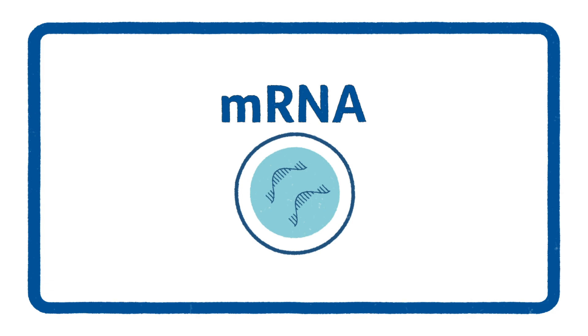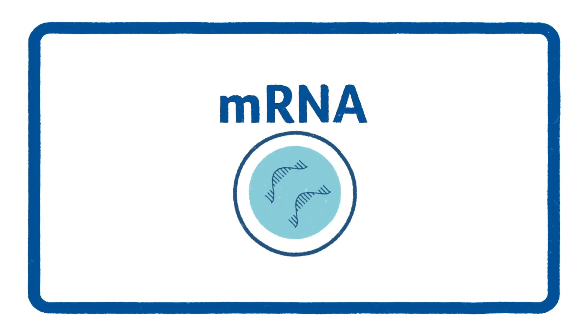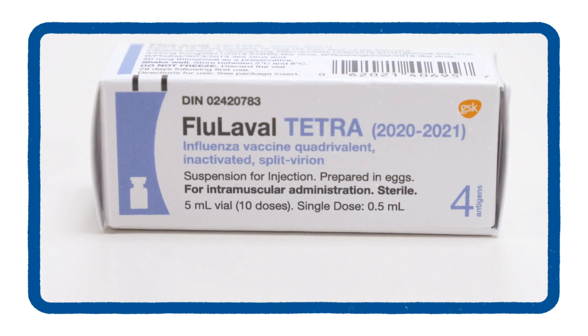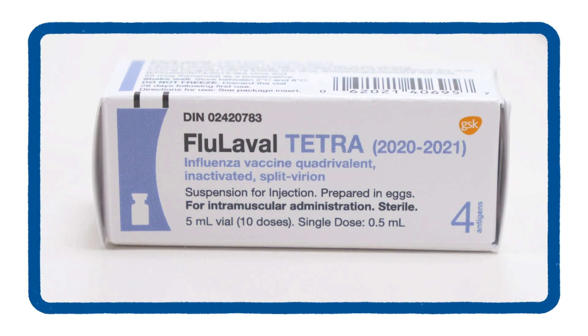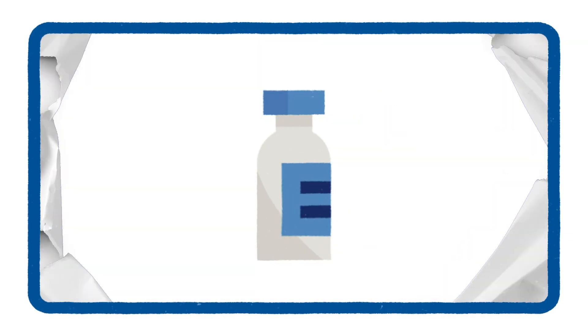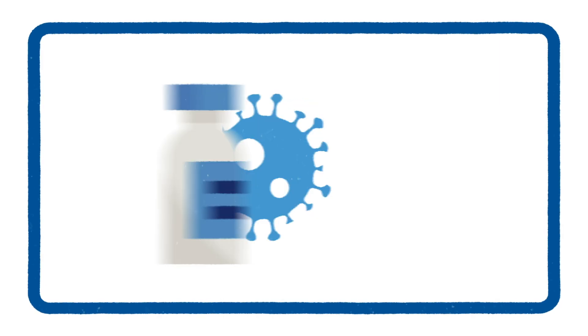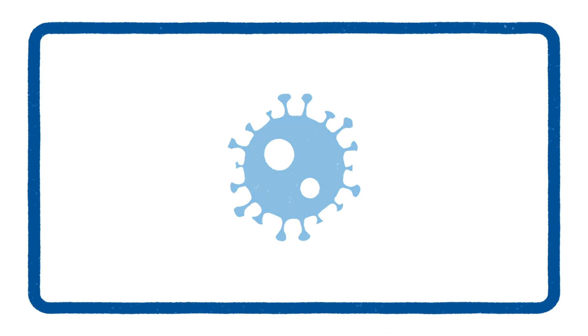Before we begin, let's briefly talk about how vaccines work in general. Vaccines teach our body to fight off potential future infections by prompting an immune response. In most vaccines, this happens by either exposing the body to a weakened or dead version of a virus, or to a very small piece of a virus.